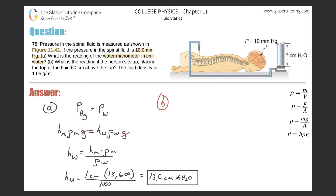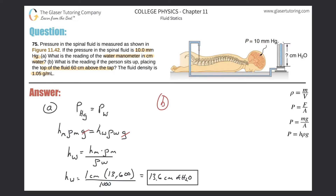For letter B, the question asks: what is the reading if the person sits up, placing the top of the fluid 60 centimeters above the tap, and the fluid density is 1.05 grams per milliliter? For letter A we assumed the spinal tap and the column of water were at the same height. Now the person is going to stand up, and the distribution of the fluid will no longer be at the same height.